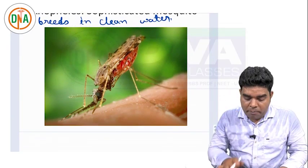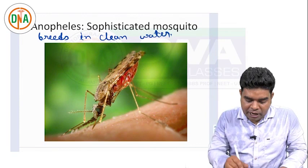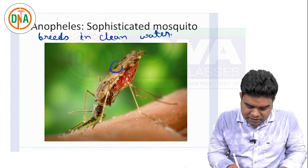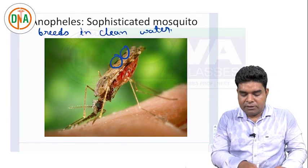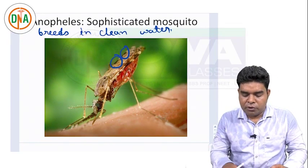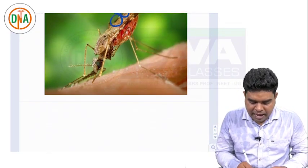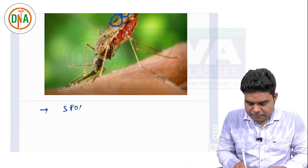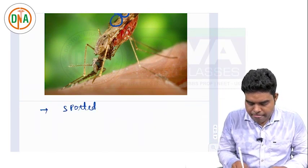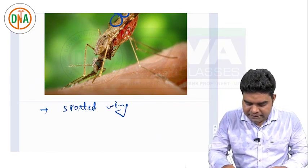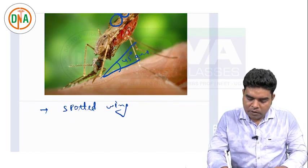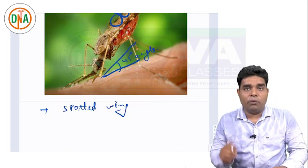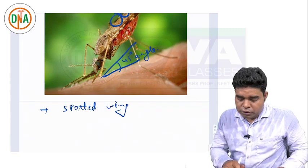One very common exam question about Anopheles is that it has a spotted wing — you can see there are black spots on the wing. So remember: Anopheles, the Sophisticated Mosquito, breeds in clean water, has a spotted wing, and sits at a 45-degree angle while biting.